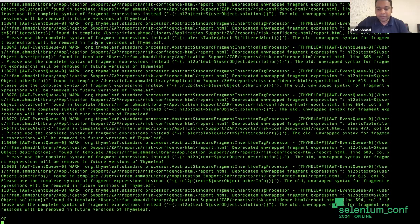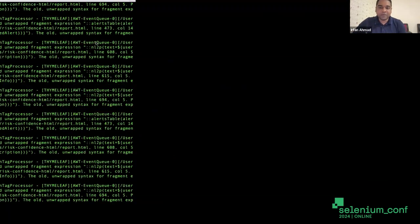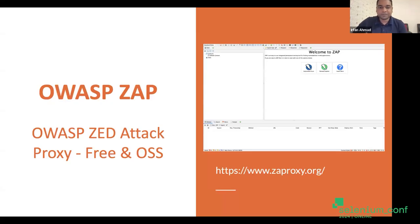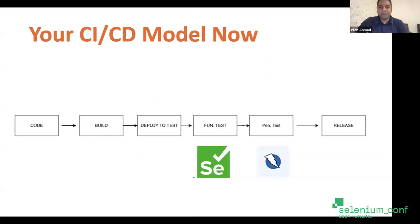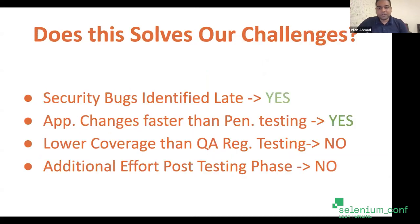We'll take the example of OWASP ZAP and figure out how we can have a similar report with Selenium also. Now with this model, does it solve all our challenges? We can identify security bugs earlier - that is solved. Can we do penetration testing as seamlessly as application changes? Yes, we can because of this model. But does it have the same coverage as QA regression testing? No, because we'll have to do those things with these tools.